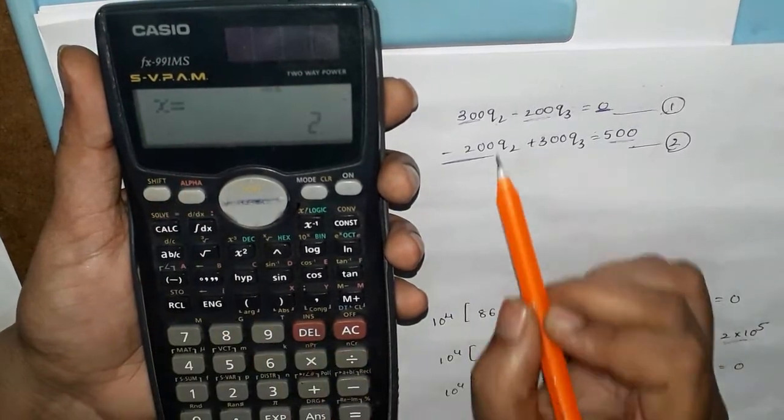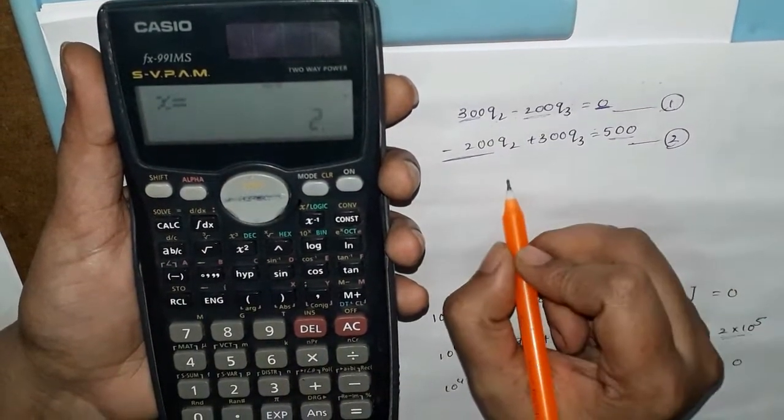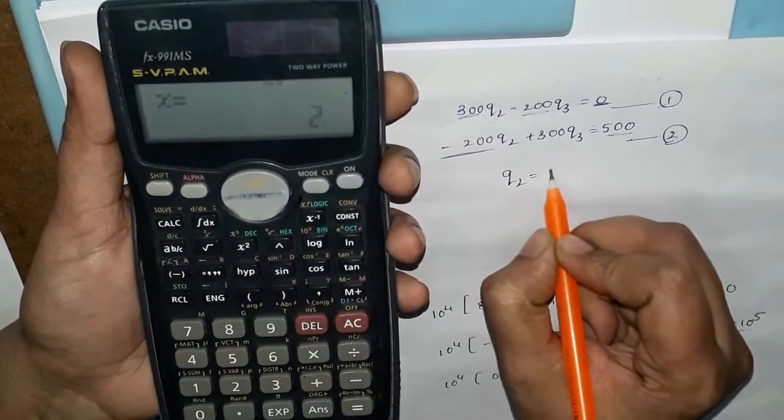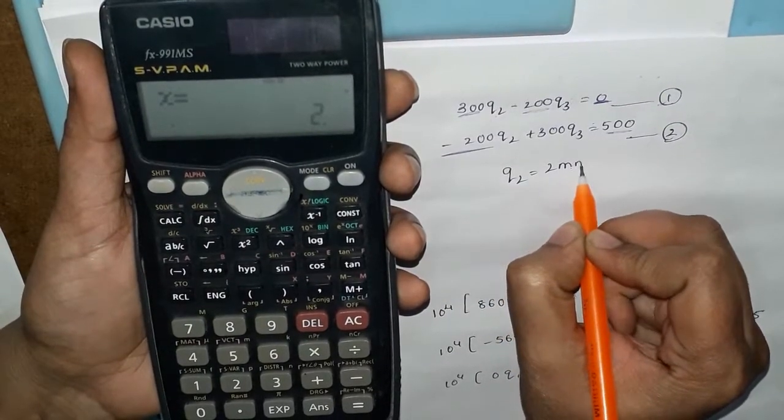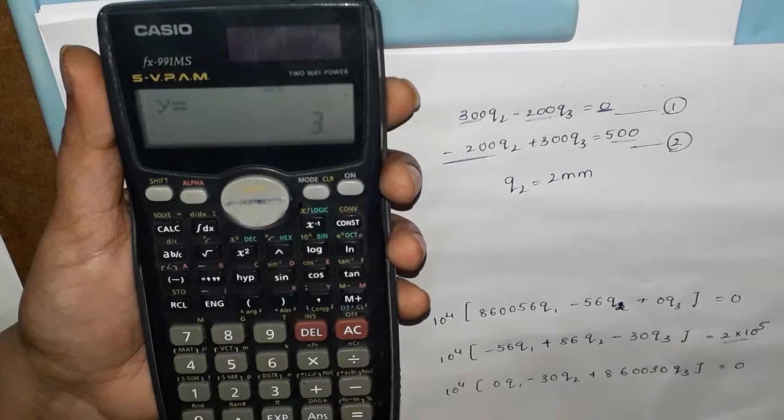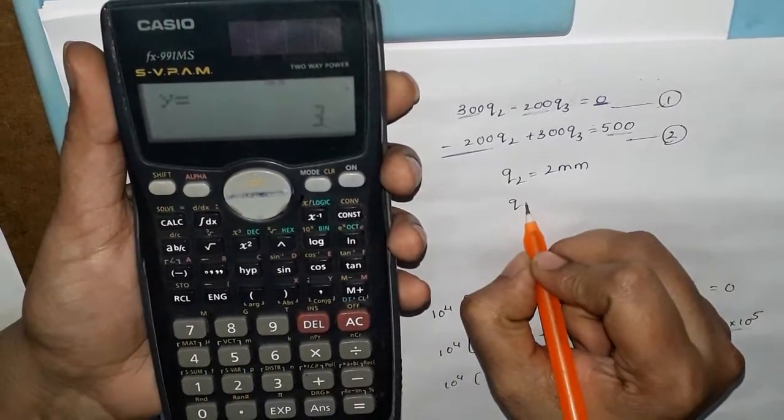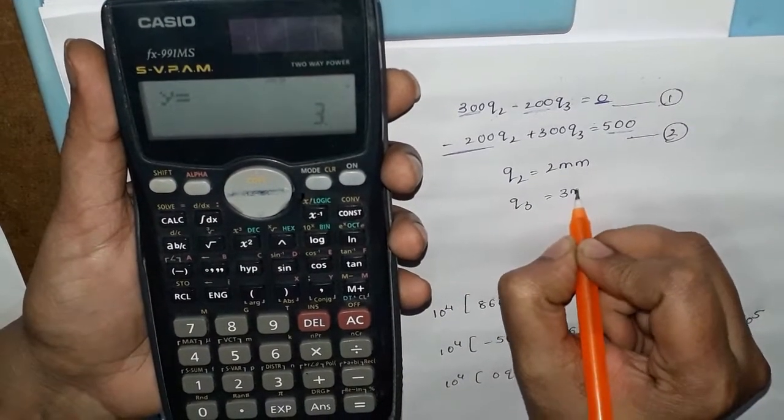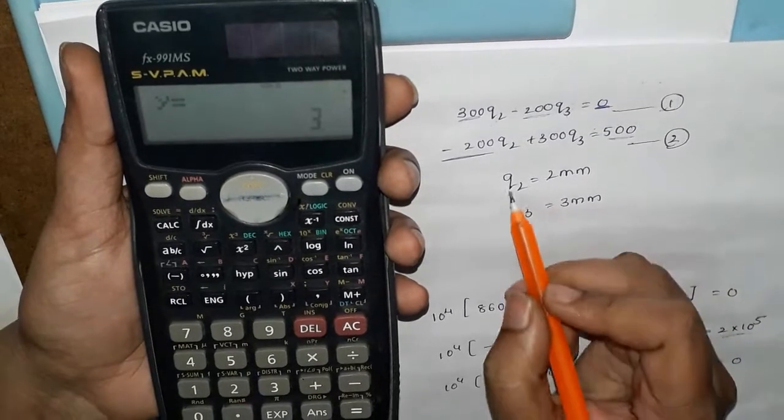So the first term q₂ value is 2 mm, which is equal to 3 mm. We will find out 2 unknowns values.